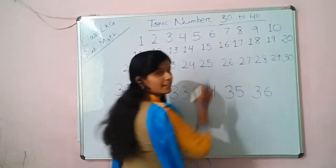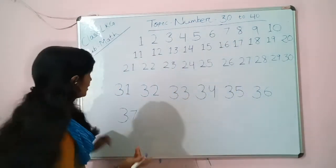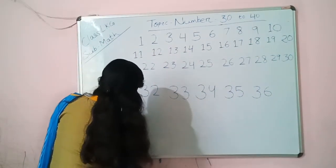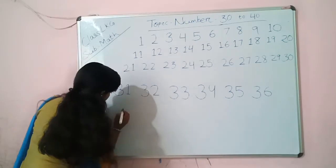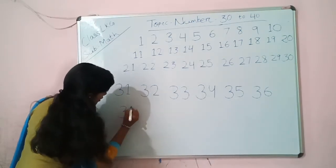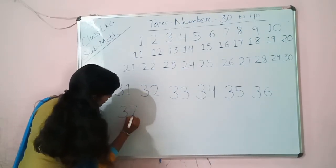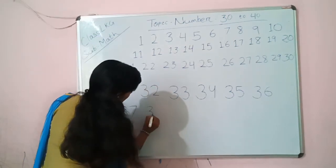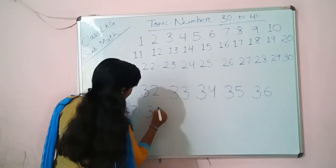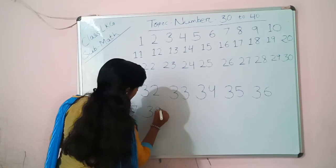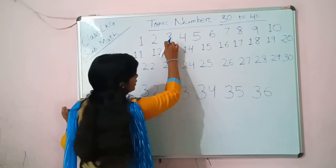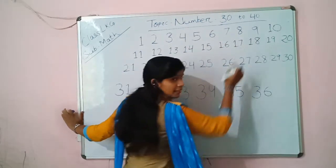3, 8, 38. Sorry. 3, 7, 37. 3, 8, 39, 38. 3, 9, 39.